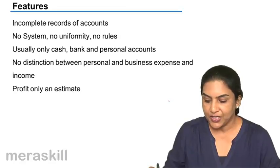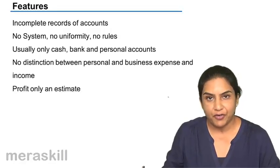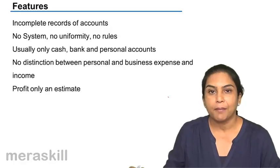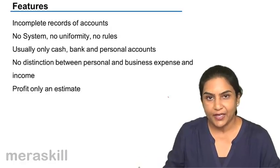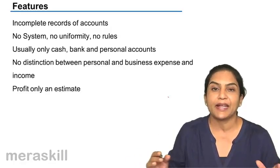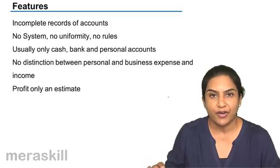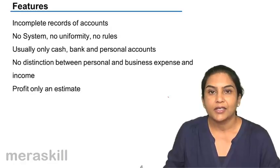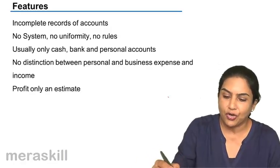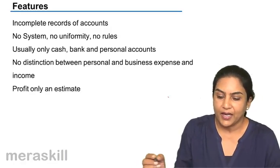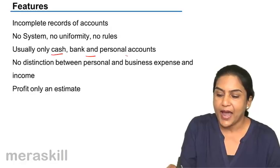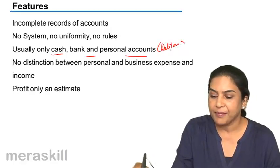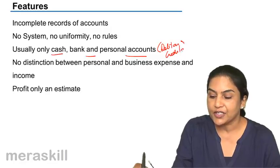What are its features? First, incomplete record of accounts. Unlike in the double entry system, complete accounts are not maintained. They may not maintain a purchase account, sales account, rent account, advertisement account, etc. Normally, only cash, bank, and personal accounts — if required, for debtors and maybe creditors — is what is maintained.